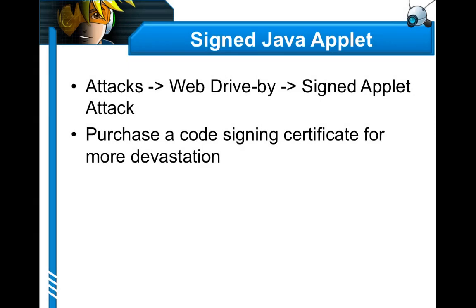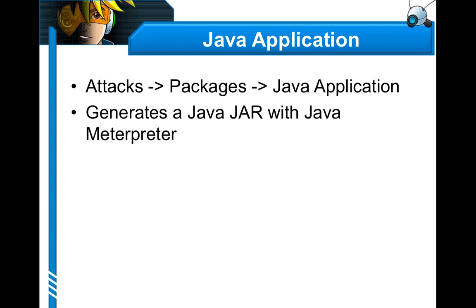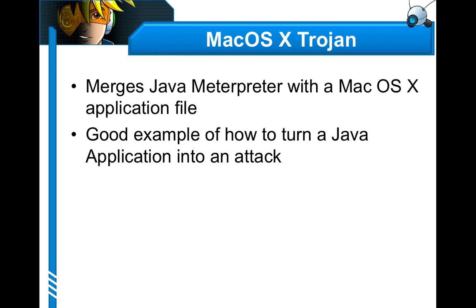Another attack to be aware of is the signed applet attack. Go to Attacks, Web Drive By, Signed Applet Attack, and set up the Java signed applet client-side exploit. If you want it to be effective, purchase a code signing certificate — they run about $100 to $200 — and use it to sign the applet to make it more convincing. The user sees it's verified by a certificate authority, making them more likely to grant permissions. It's also possible to export Java Meterpreter as a Java JAR file through Attacks, Packages, Java Application — anywhere you can deliver a JAR file, use it.